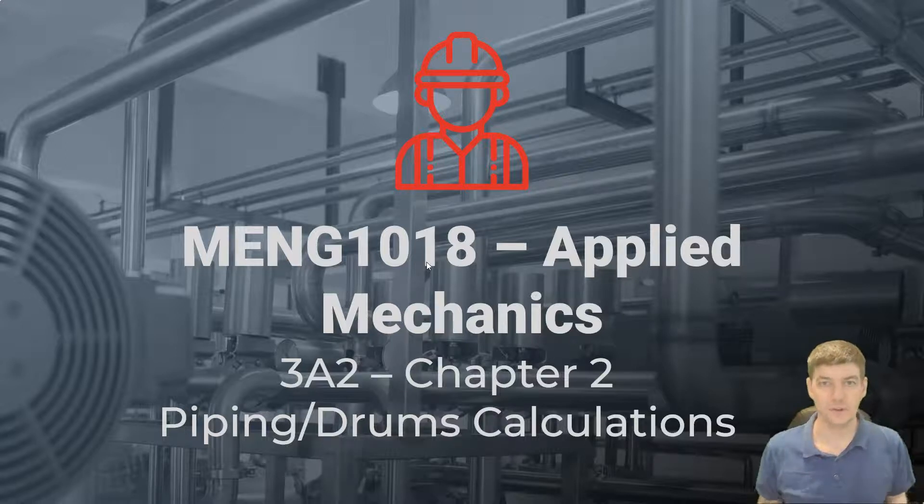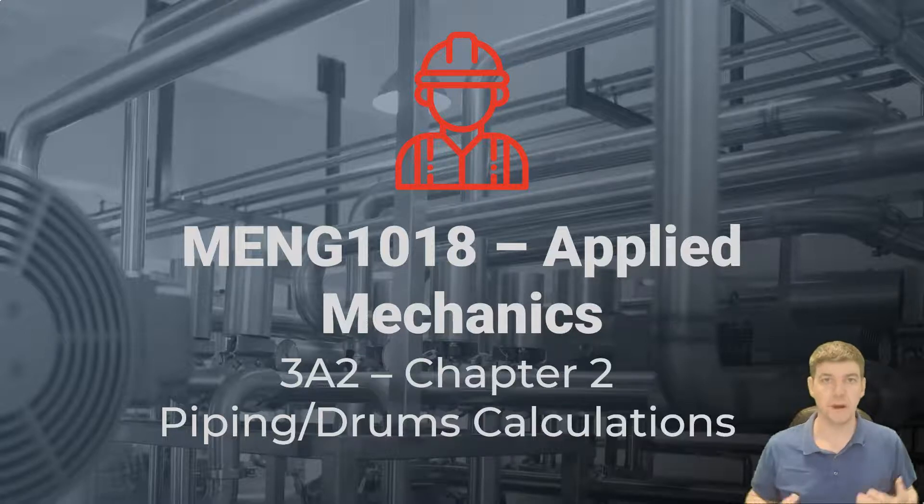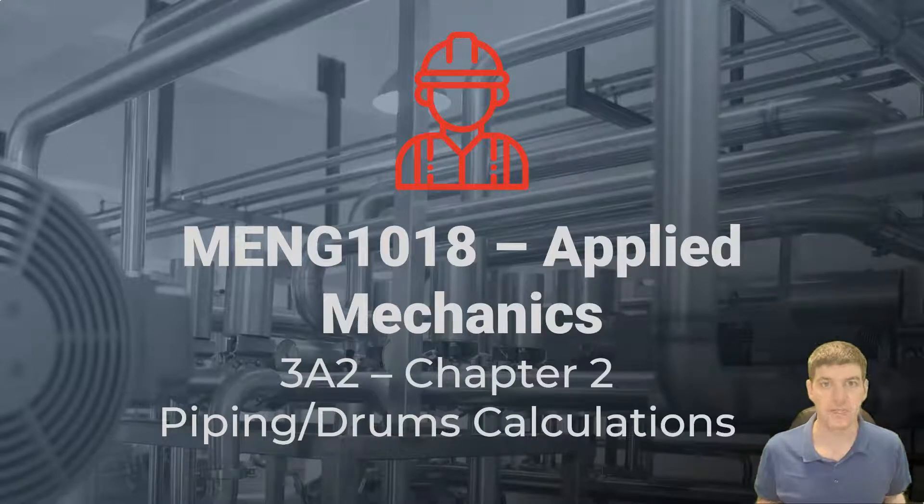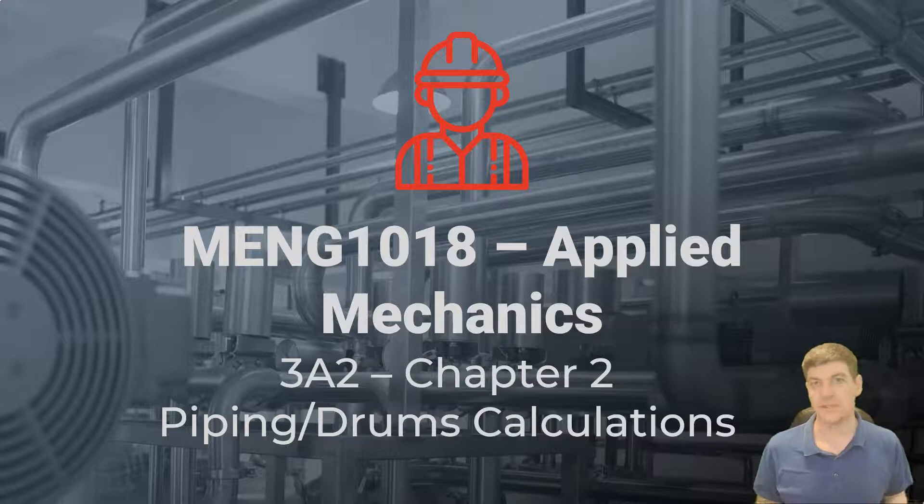Okay, so now we're on to part two of our ASME code calculations. This time we're going to do piping and drums and other thicker wall pressure vessels. So we did tubing before, now we're going to follow the same sort of procedure with just some different equations and some different factors when we deal with piping, drums, headers, and other pressure vessels such as that.